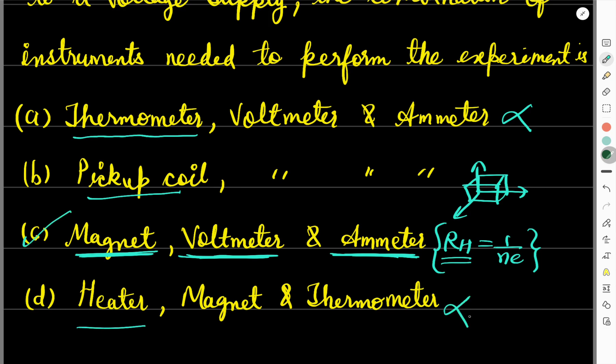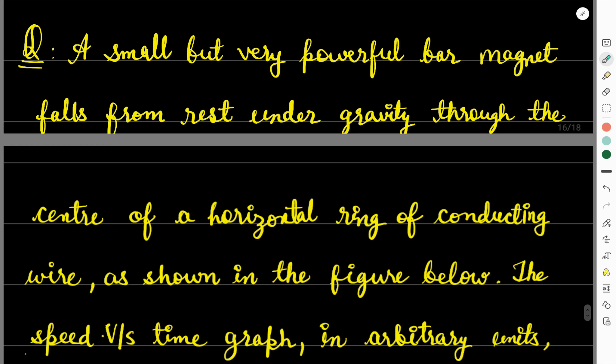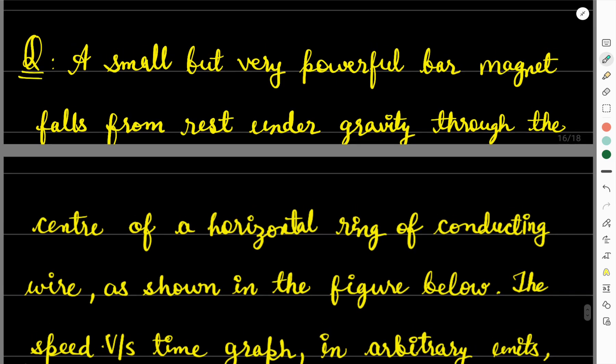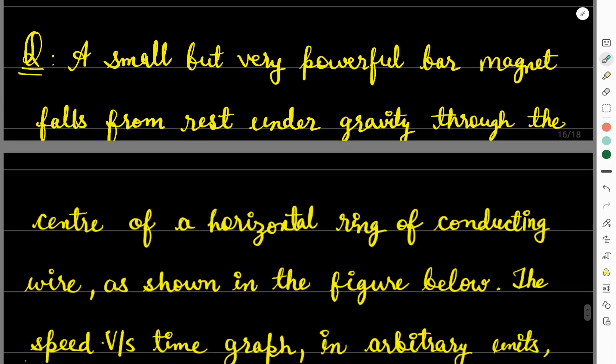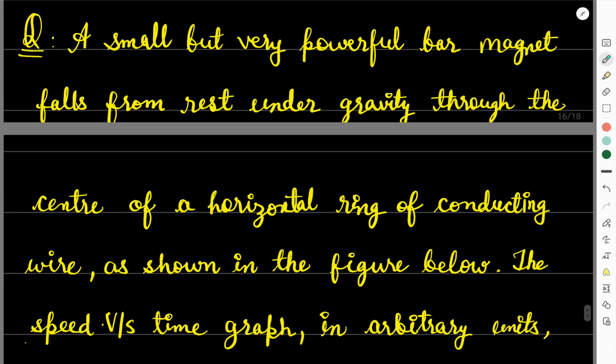So R_H is 1 upon ne, from this we get an idea of what type of semiconductor we have. So option C will be the correct answer. Heater is also not needed, so that option is also discarded. So by discard method you can do this question very easily. See, TIFR has experimental based questions also, which will help a lot in interview preparation too. Next question: A small but very powerful bar magnet falls from rest under gravity through the center of a horizontal ring of conducting wire. Very good question.